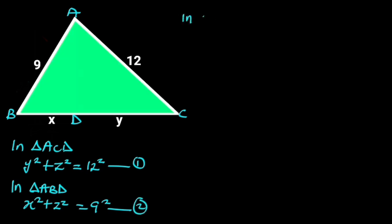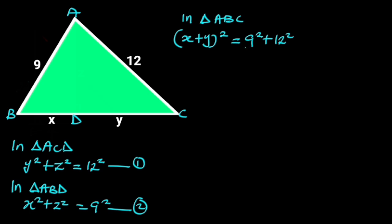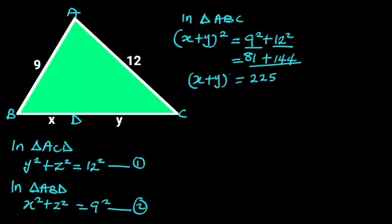In triangle ABC, (x plus y) squared is equal to 9 squared plus 12 squared. 9 squared is 81, and 12 squared is 144. 81 plus 144 is equal to 225. So (x plus y) squared is equal to 225. Let this be equation 3.